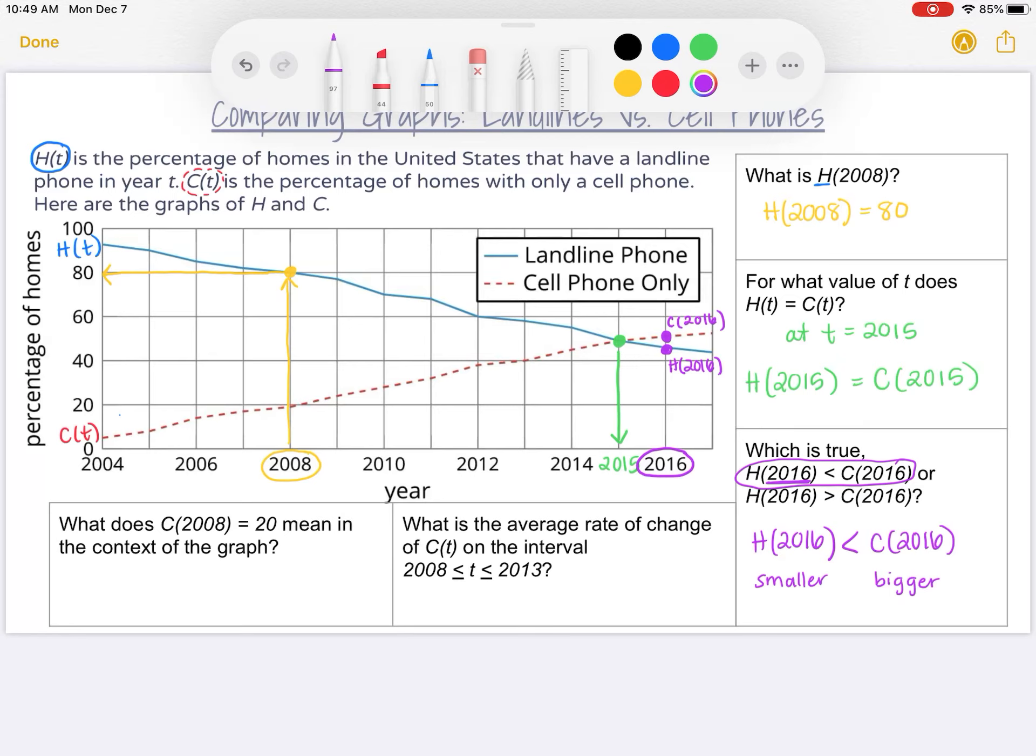I'm actually going to skip over to the left and do what does C(2008) equal 20 mean in the context of the graph. We know that the number in the parentheses is the year, and then the number outside the parentheses is our output, which in this case is percentage of homes. We should probably pay close attention to which function it's talking about. It's talking about C, which is homes with only cell phones.